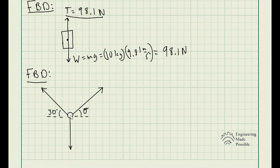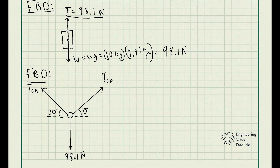Looking at the ring now, we're not drawing the cables — we're drawing the forces, or the tension in those cables. This one is tension CB because it's cable CB, and this is tension CA because it's cable CA. The force going downward is 98.1 newtons. When we first drew the free body diagram on the cylinder, the tension was going upward — T equals 98.1 going upward. But now, drawing the FBD with respect to the ring, we point it downwards.